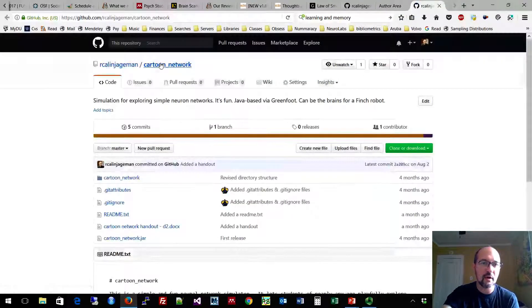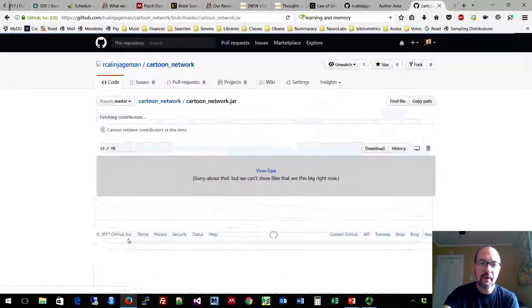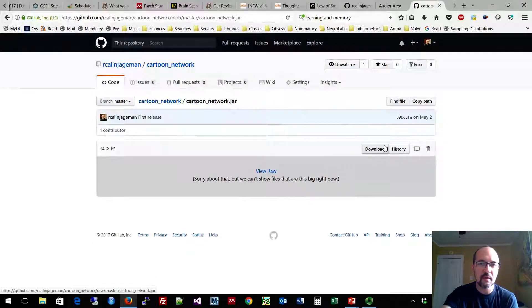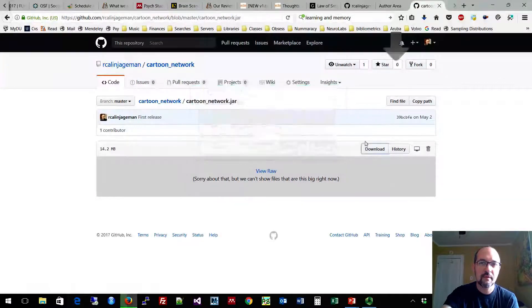When you go to GitHub to the Cartoon Network project, you'll see Cartoon Network dot JAR. You click on it, and it will ask you what you want to do with it. You'll say that you want to download it. Save the file.